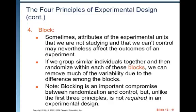Number four is block. This one is not required like the other three, but it is a principle that is used frequently. Sometimes attributes of the experimental units that we are not studying and cannot control may nevertheless affect the outcomes of an experiment. If we group similar individuals together and then randomize within each of these blocks, we can remove much of the variability due to differences among the blocks. Blocking is an important compromise between randomization and control, but unlike the first three principles, it is not required.